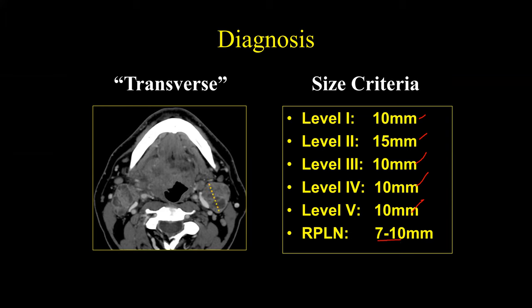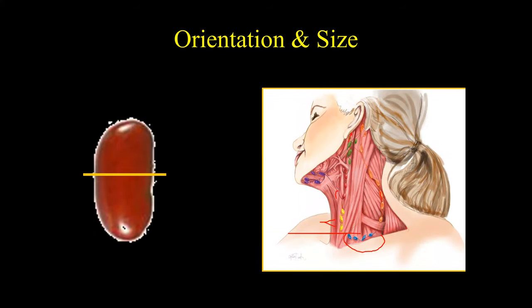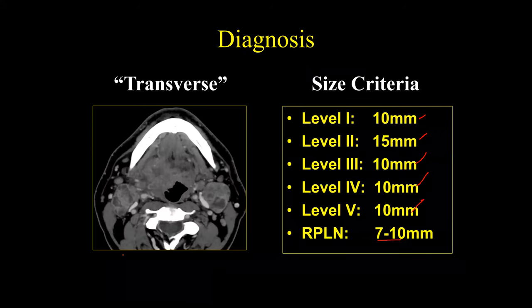We measure lymph nodes in the transverse plane. For levels 2, 3, and 4, we measure the transverse dimension; for levels 1 and 5, measurement is in a different plane — one of the weaknesses of size criteria. These criteria come from a prospective study from the mid-1990s and have been used for 25 years as the standard accepted size criteria.